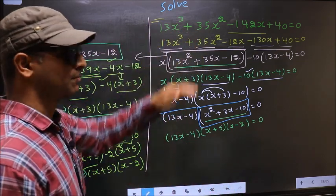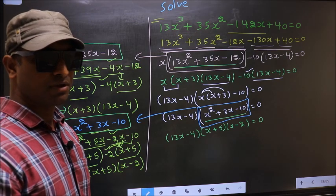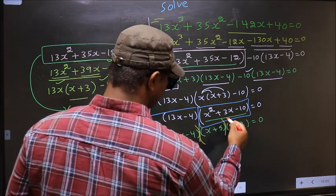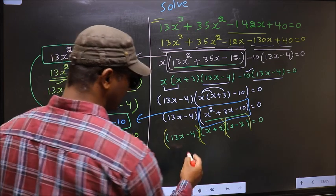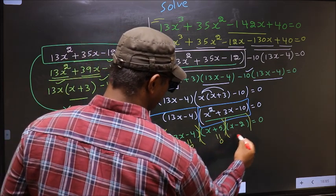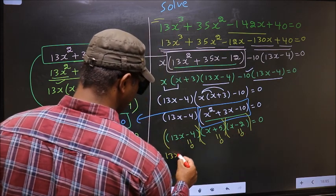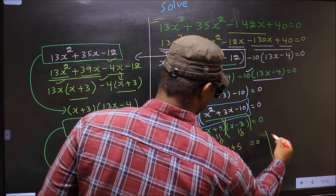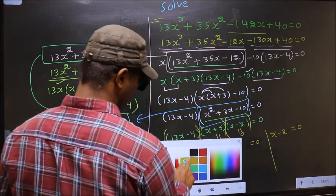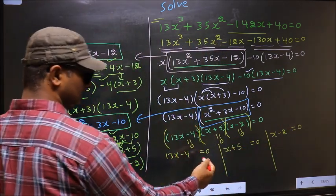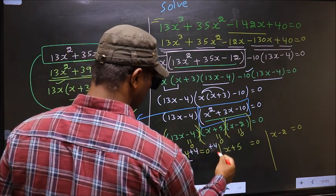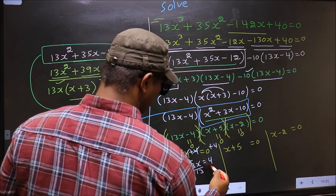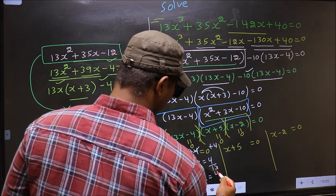They told us to solve, which means we should get the values of x. We have a product of brackets equal to 0, so we equate each bracket to 0. That is: 13x - 4 = 0, x + 5 = 0, x - 2 = 0. To get x from the first: add 4, giving 13x = 4, then divide by 13, giving x = 4/13.